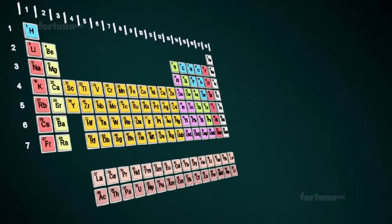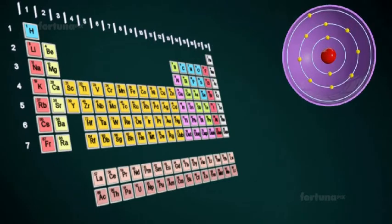We can use the table to easily identify the atomic number, atomic mass, and number of protons, neutrons, and electrons found in one atom of an element.